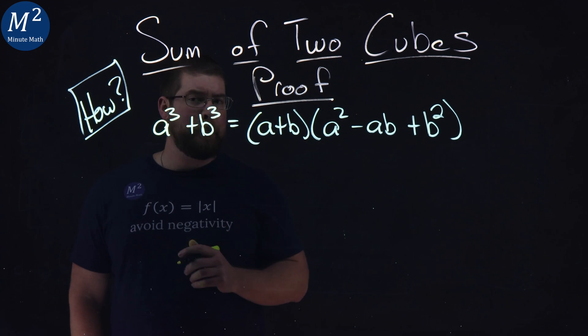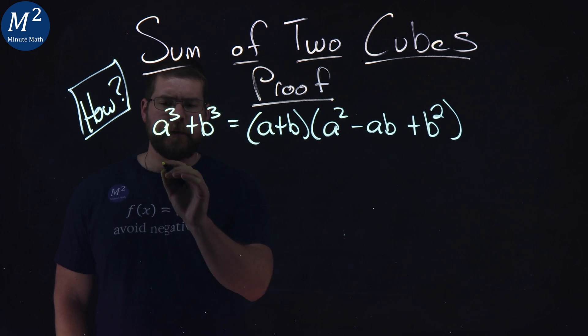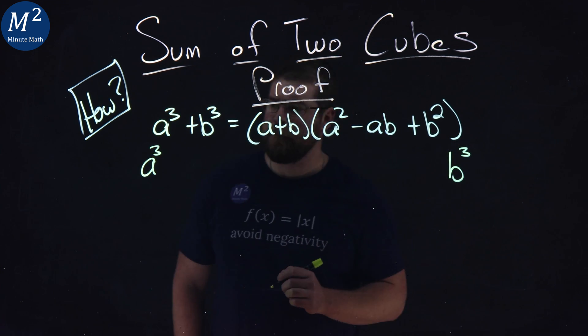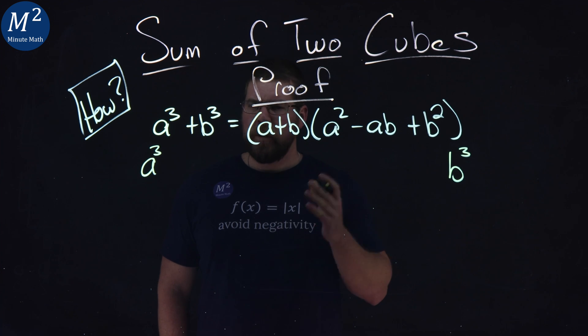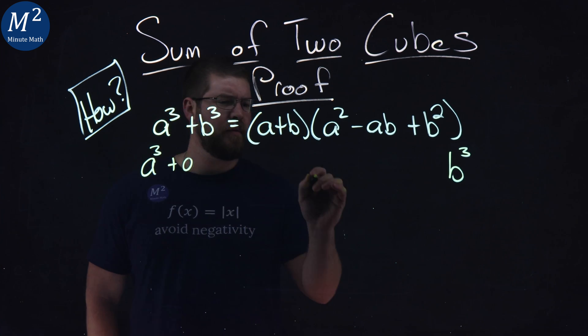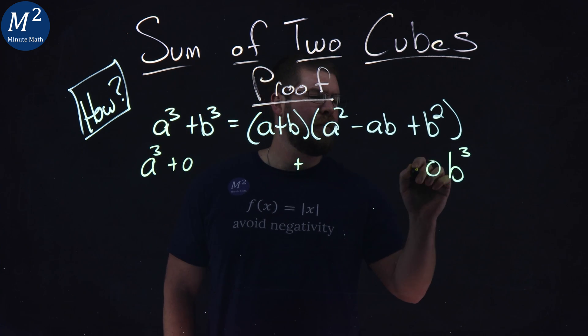So I have a cubed plus b cubed. Let's use some algebra here. I'm going to rewrite that as a cubed and I put b cubed over here. Now what we know about any expression, we can add zero to it and it doesn't change, right? So if I add a zero right here with a plus sign in the middle, and I put a zero here with a plus sign right there.